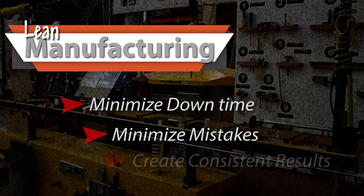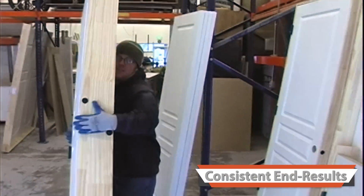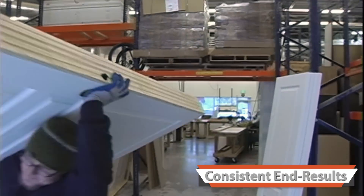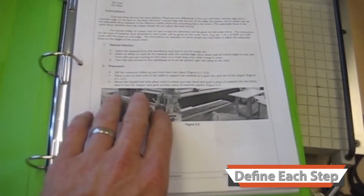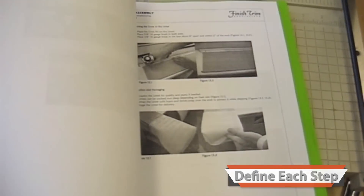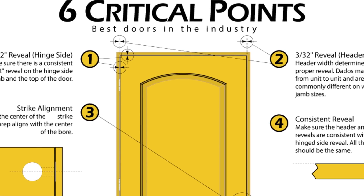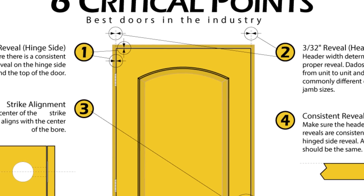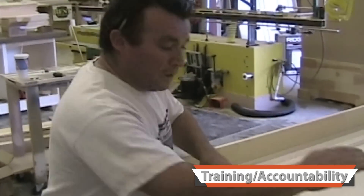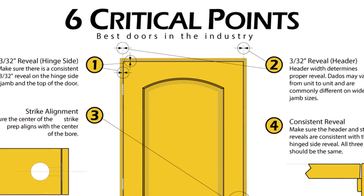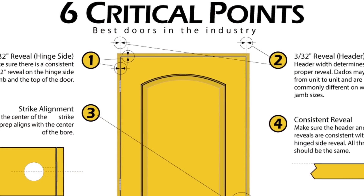The third key factor in lean manufacturing is to create consistent end results. The key is to get consistent end results time after time, day after day, no matter who is working the shift. First, we clearly defined each step in the process and identified six critical points that must be done in order to achieve the desired results. Then each operator was trained and held accountable for following these steps. The formula for building the best doors in the industry was displayed right above the machine for all to see.